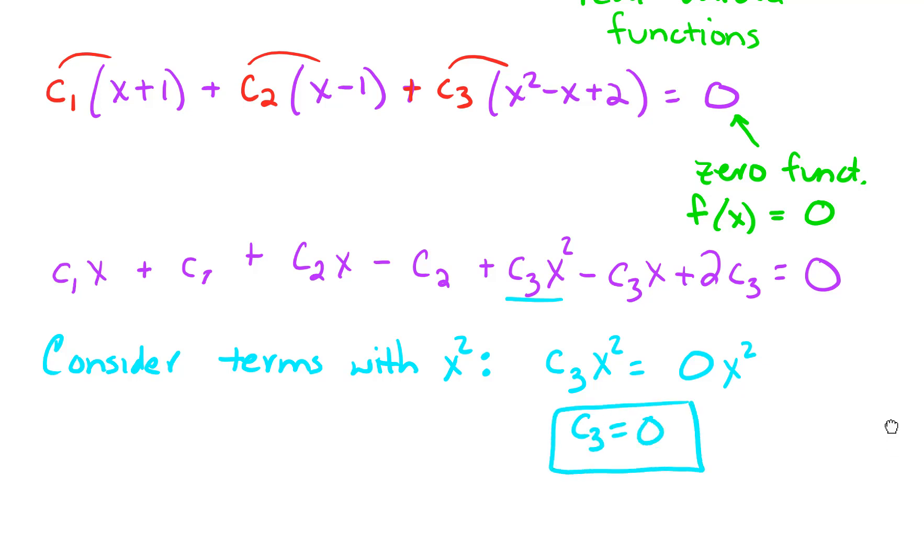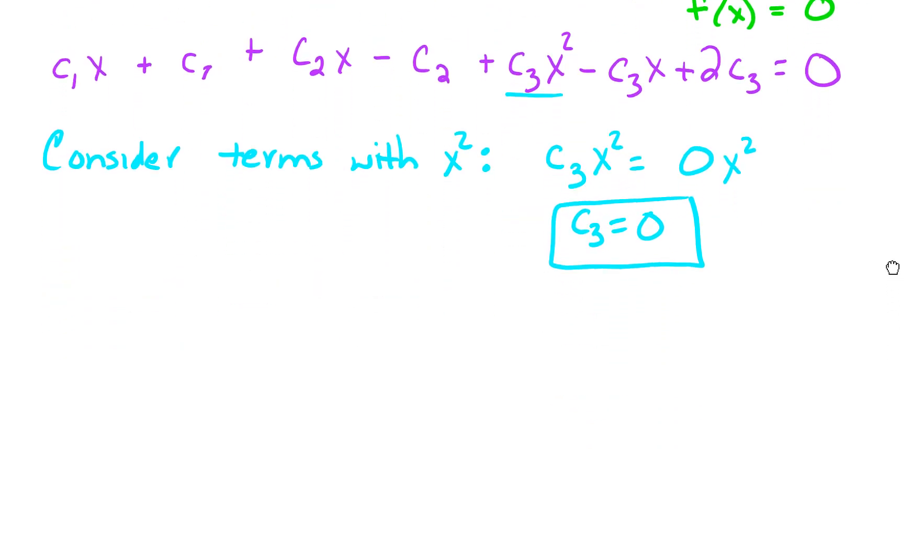Let's see what else we can determine here. Something else that's really useful, if we look at the linear terms, the terms with just an x in them. So consider terms with x. In this case, on the left-hand side, we have C1x plus C2x minus C3x equals zero x.